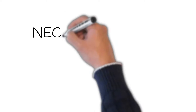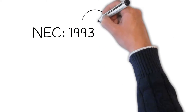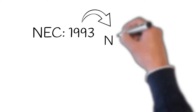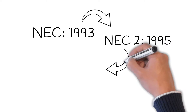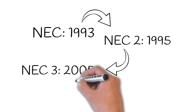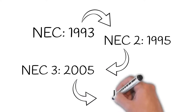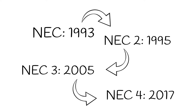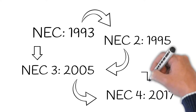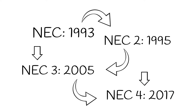The first edition of the NEC was released in 1993. Subsequently, it evolved into NEC 2 in 1995, NEC 3 in 2005, and most recently NEC 4 in 2017. At the moment of writing this article, most contracts are currently procured under NEC 3. However, it's anticipated this will likely move into NEC 4 in the next couple of years.